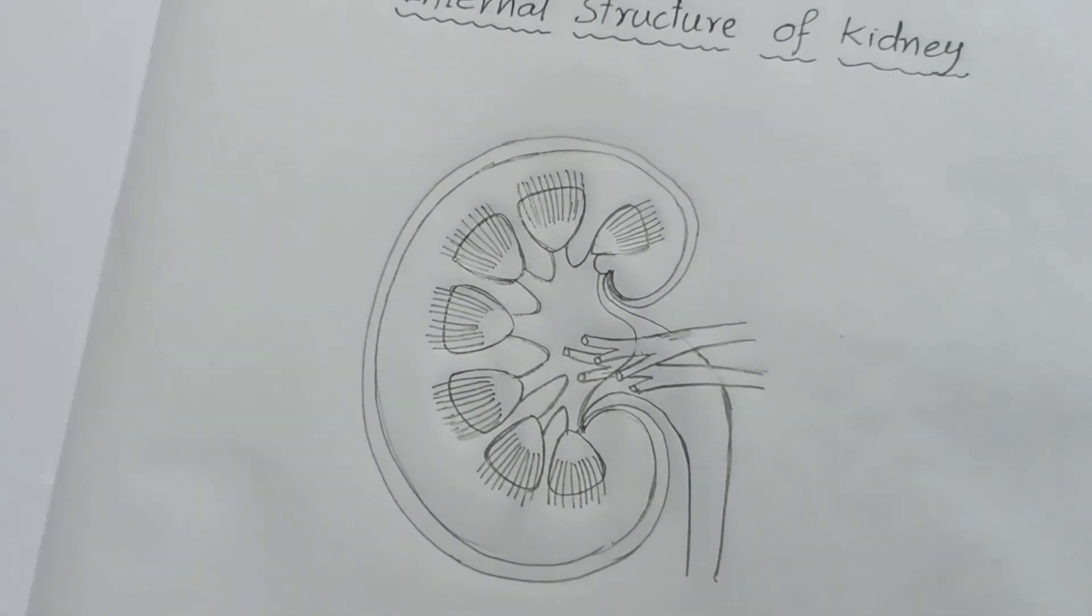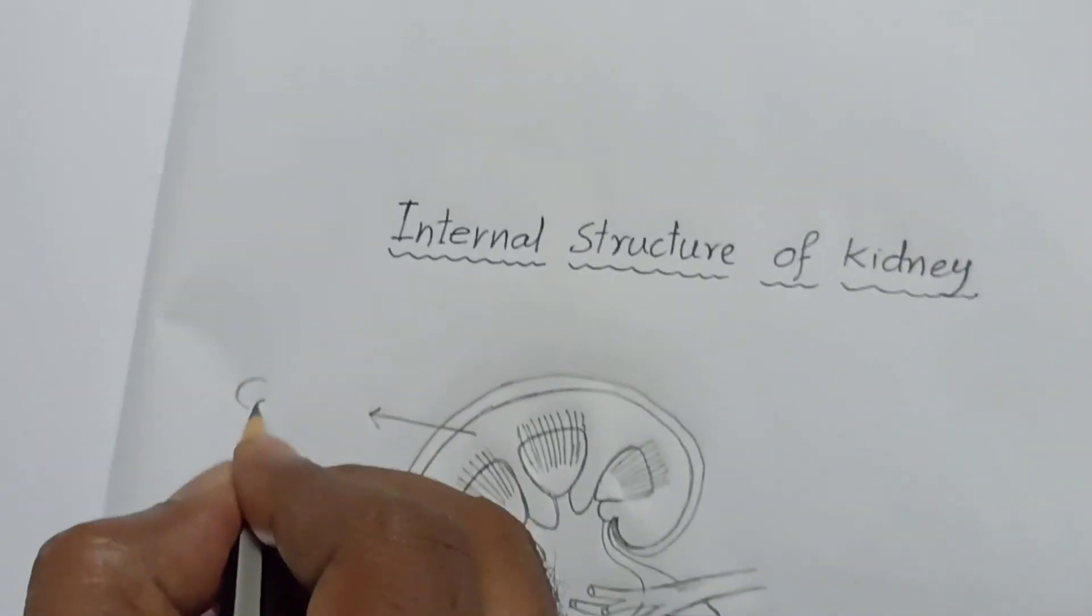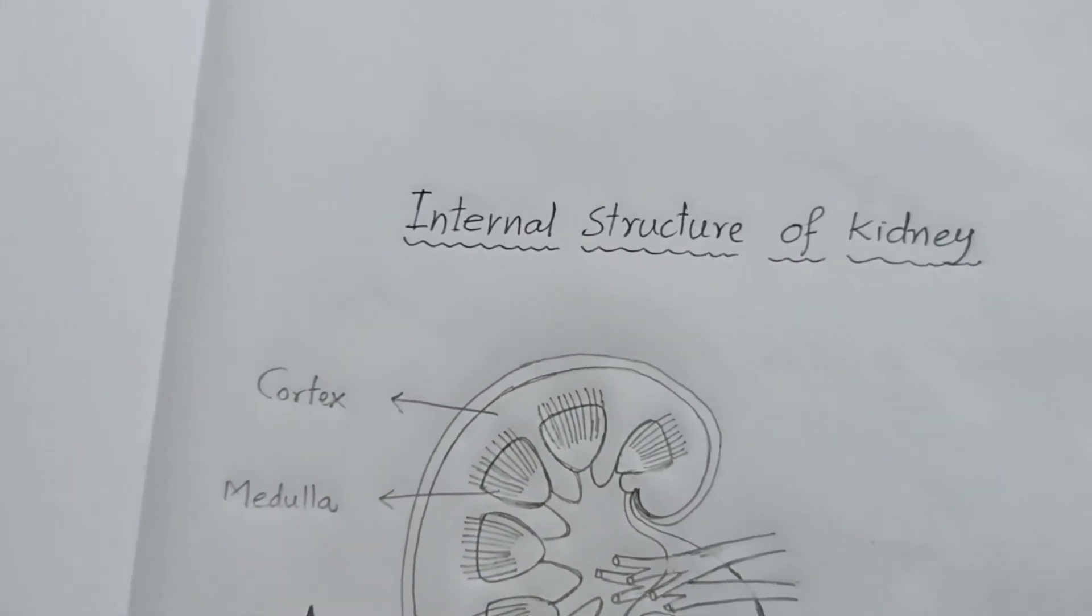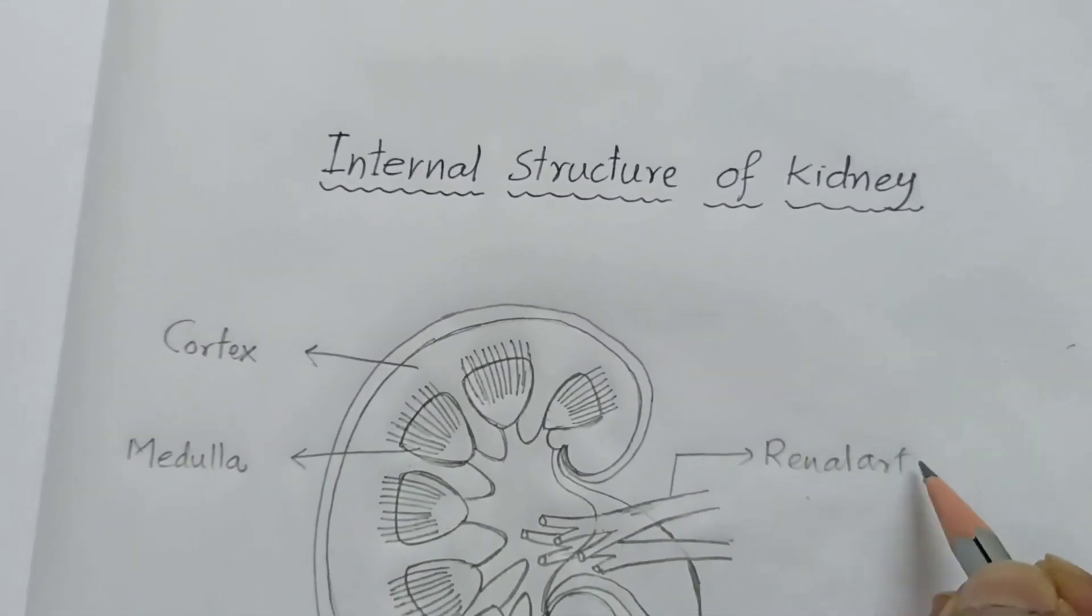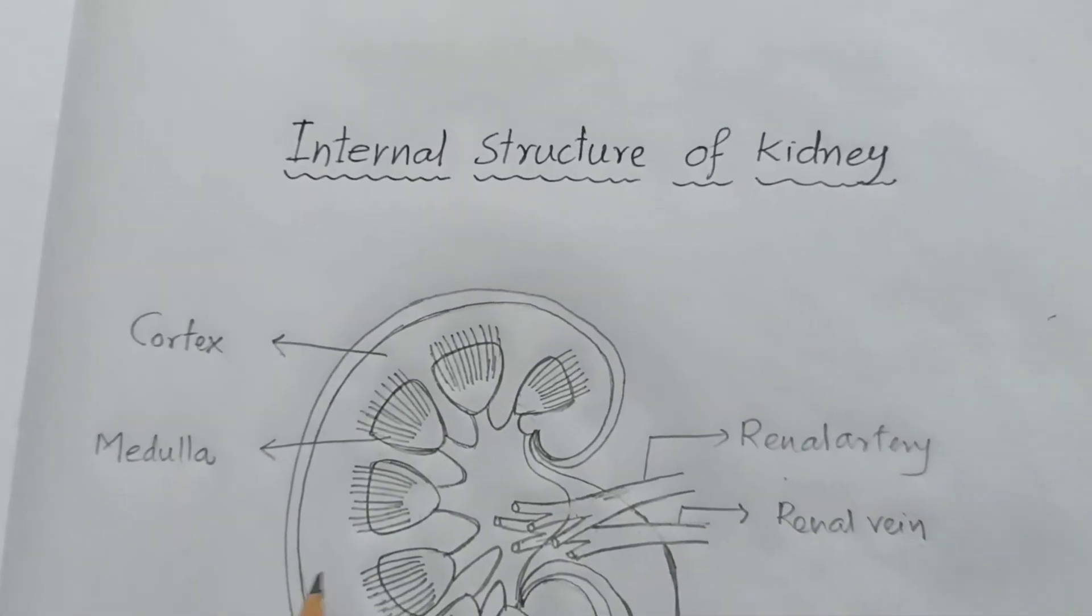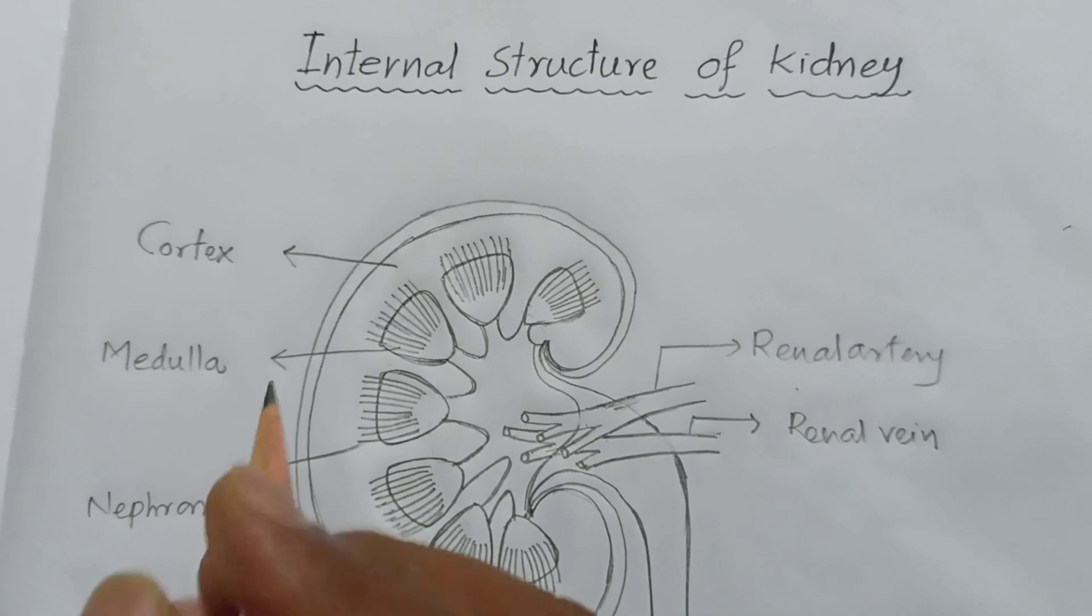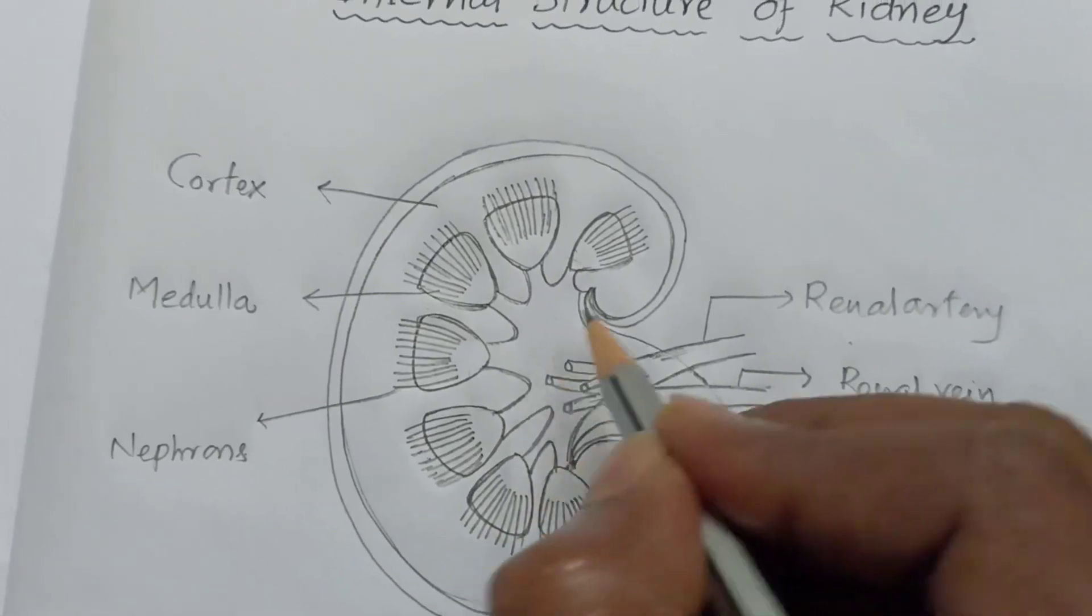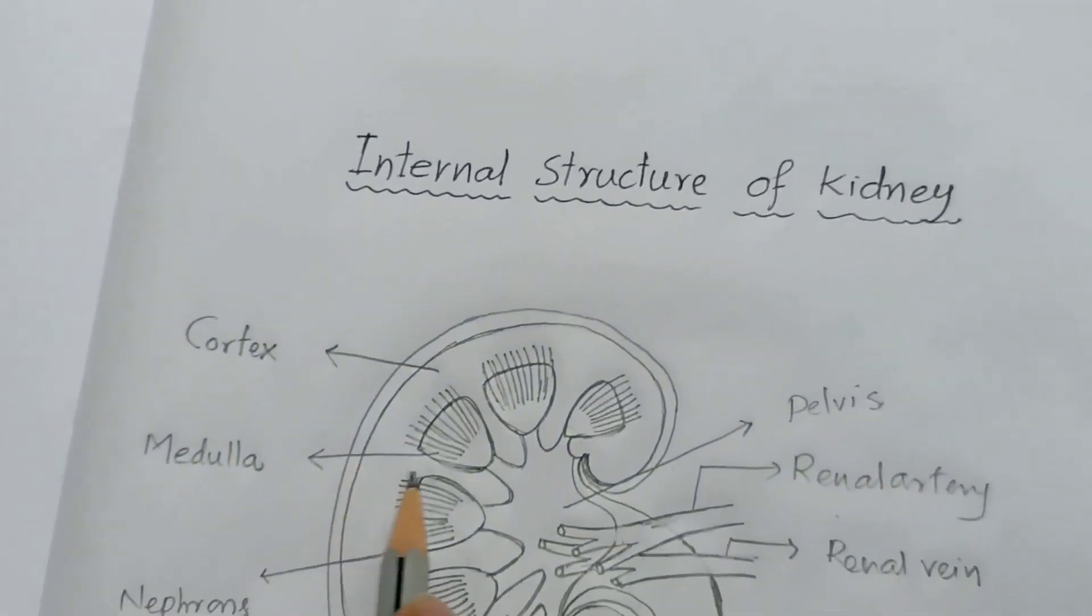Draw like this. Good. It's labeling time. This is the internal structure of kidney. You draw one more line like this around the kidney. Draw like this. This region is known as pelvis.